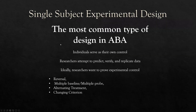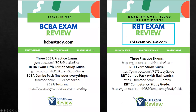All right, great. Single subject experimental design — the most common type of design in ABA. Individuals serve as their own control. Researchers attempt to predict, verify, and replicate. Ideally, we want to prove experimental control. The designs covered: reversals, multiple baselines, multiple probes, alternating treatments or multi-elements, and changing criteria. Thank you for watching. BCBAstudy.com for BCBA materials, RBTExamReview.com for RBT materials. Subscribe, join, let us know your questions and comments. As always, work hard, study hard.